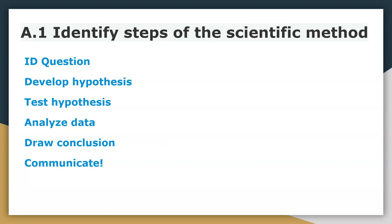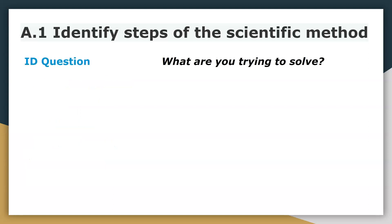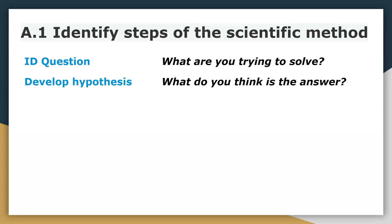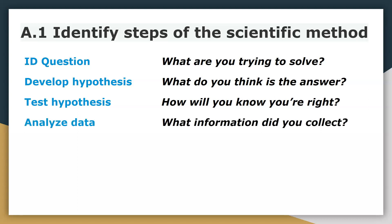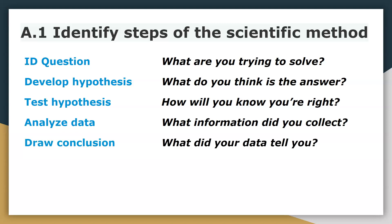As a very quick refresher, here are the six steps with the key question for each: For identifying the question — what are you trying to solve? For developing the hypothesis — what do you think is the answer? For testing the hypothesis — how will you know that you're right? For analyzing the data — what information did you collect? For drawing a conclusion — what did your data tell you? And for communicate — who will you tell?